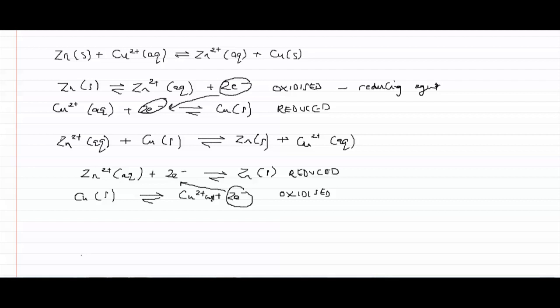And to answer our question about which direction the reaction is most likely to happen in, we have to consider the reduction potential. And for this, we consider these two reactions. We consider zinc being reduced and we consider the equivalent of copper being reduced.